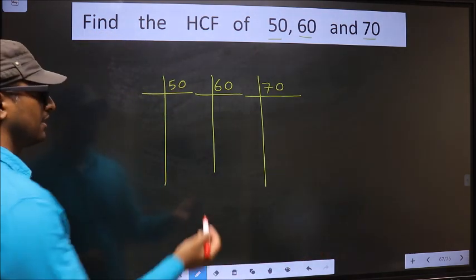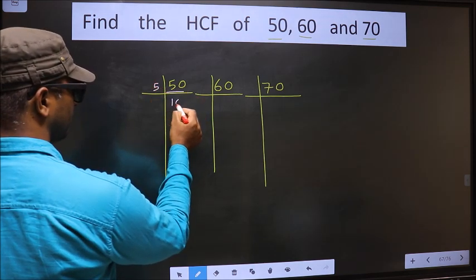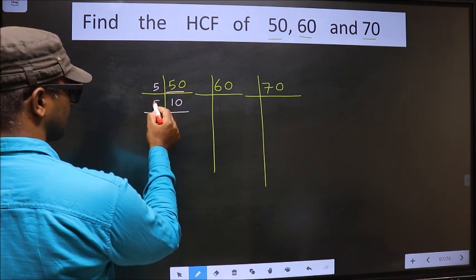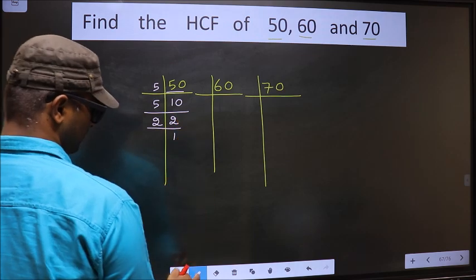Next, the first number is 50. 50 is 5 times 10. 10 is 5 times 2. Now here we have 2, 2 is a prime number so 2 times 1 is 2.